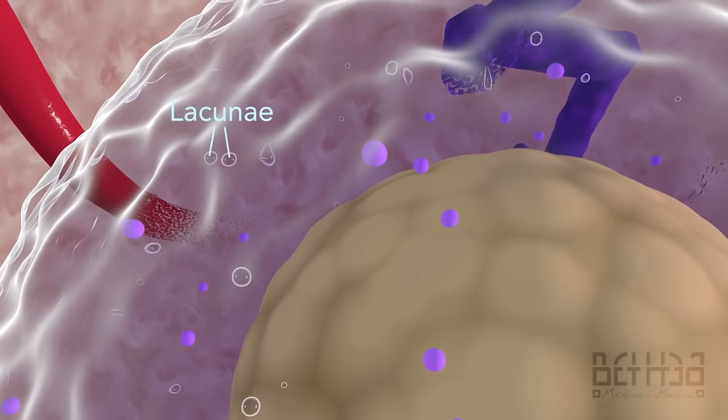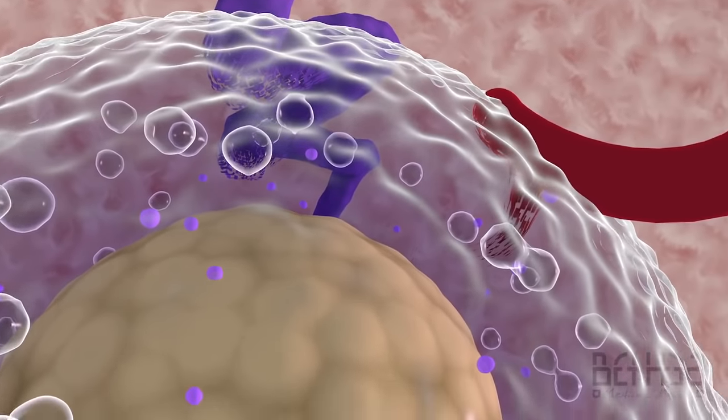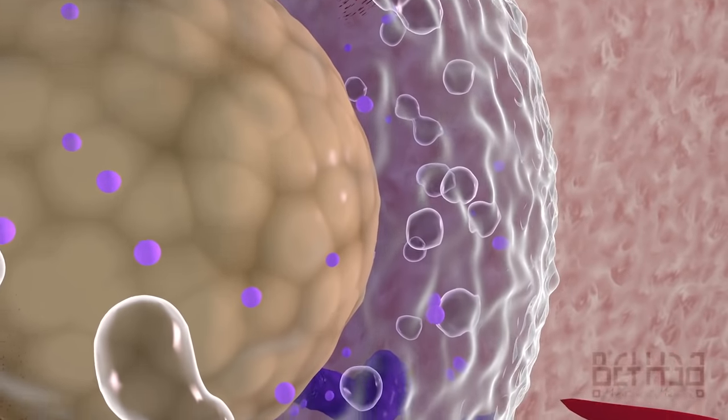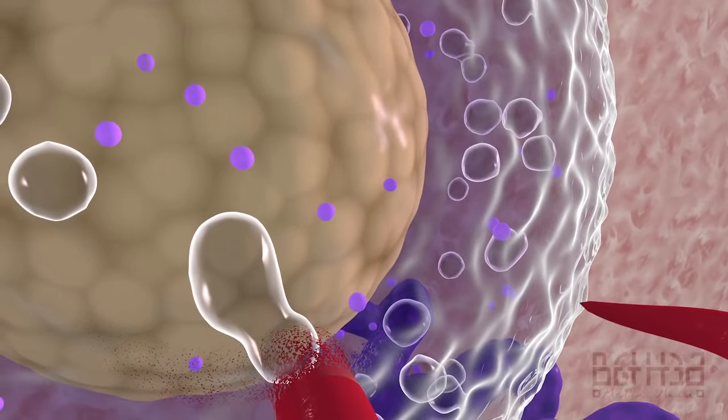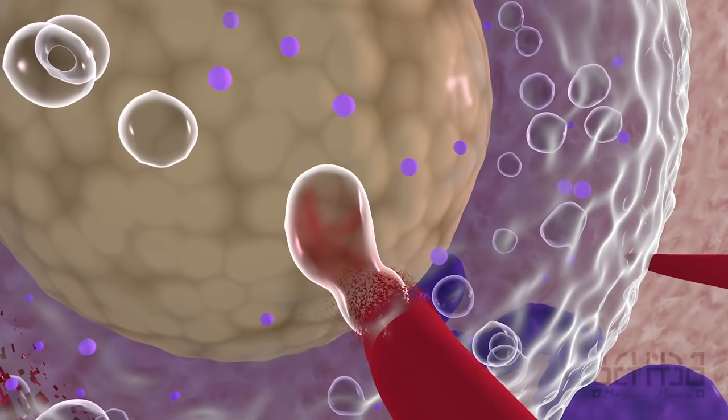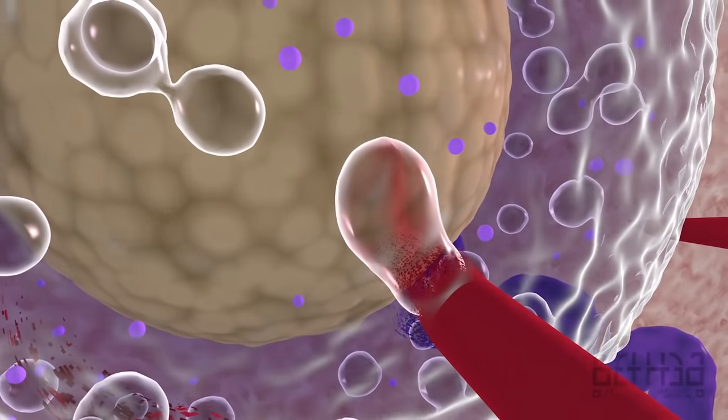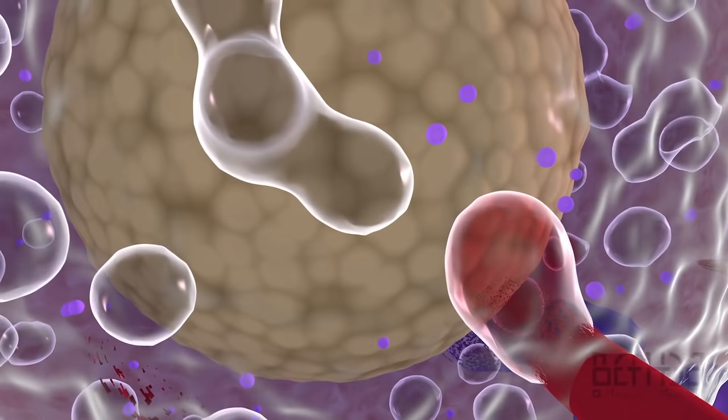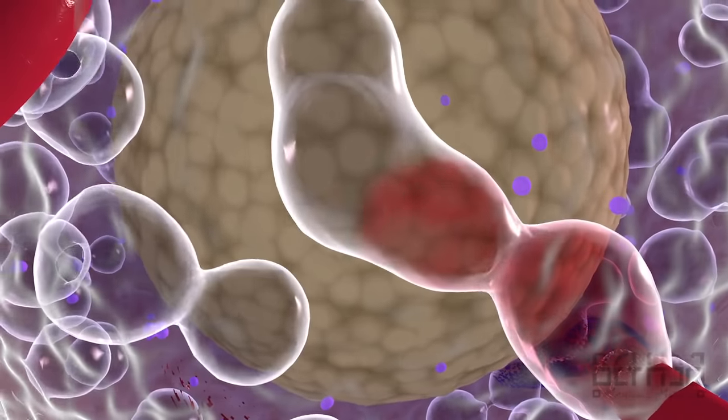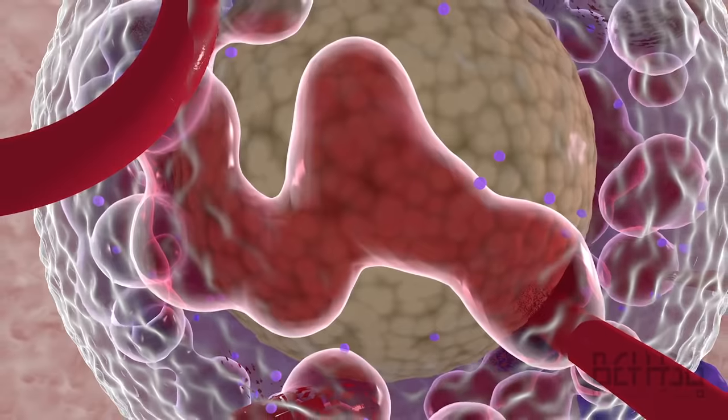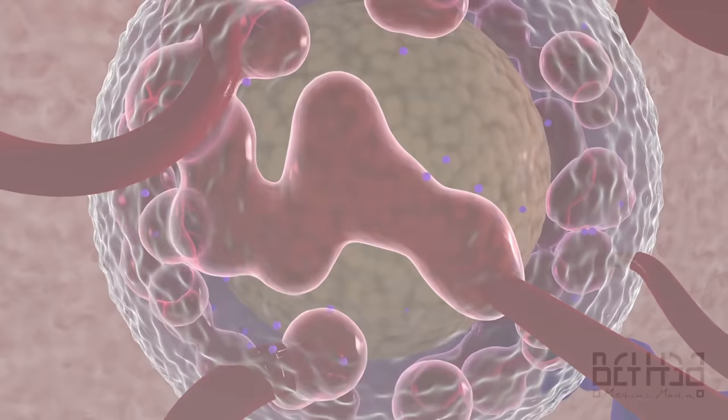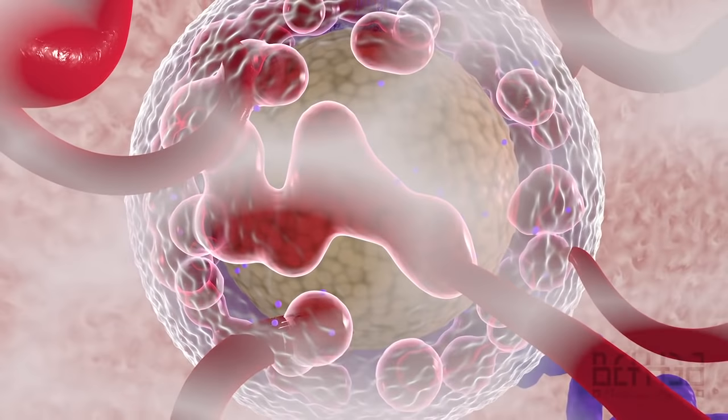Lacunae, or spaces, begin to form within the syncytiotrophoblast. As the syncytiotrophoblast erodes the endometrial blood vessels and glands, the lacunae become filled with maternal blood and glandular secretions. Isolated lacunae fuse to form a network through which maternal blood flows, thus establishing early utero-placental circulation.